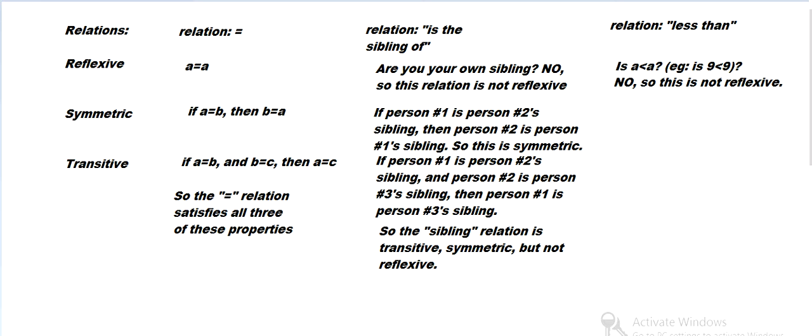How about symmetric? If a number is less than a second number, then is the second less than the first? So if A is less than B, then is B less than A? And that's not true, so 9 is less than 10, but 10 is not less than 9. So that's not symmetric.